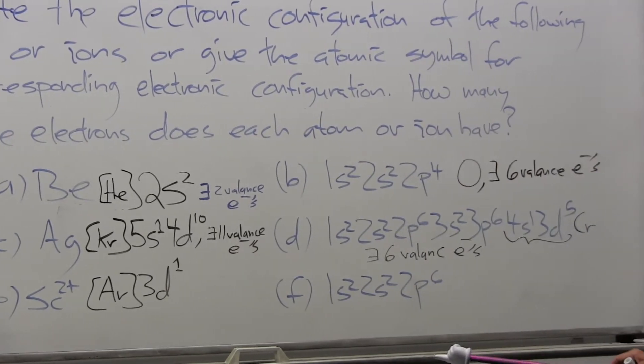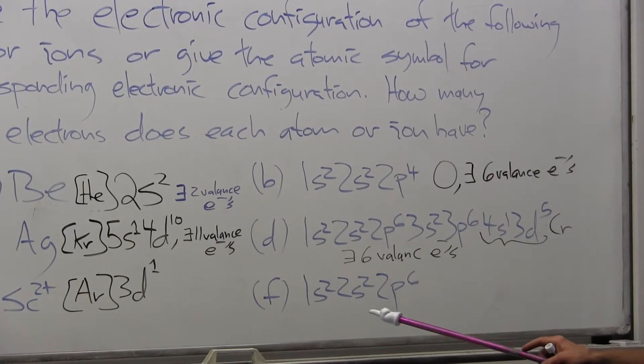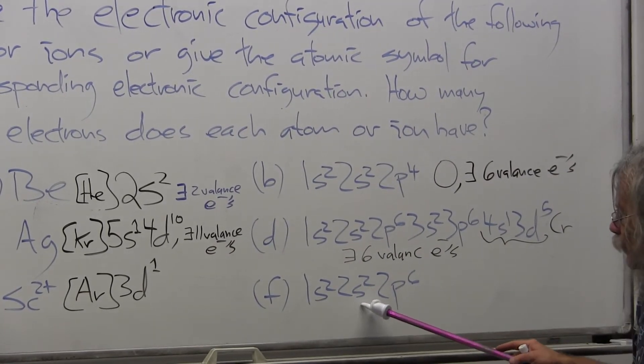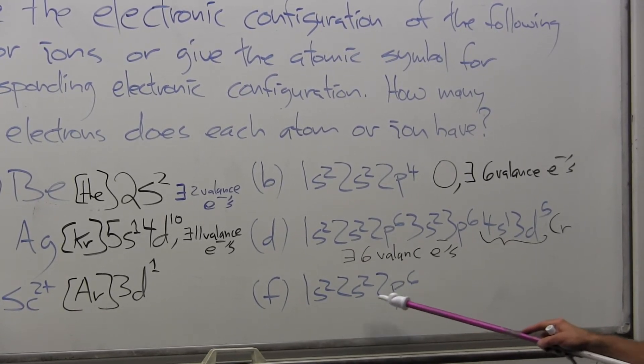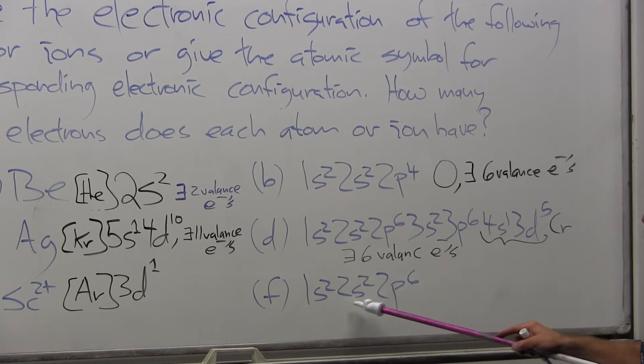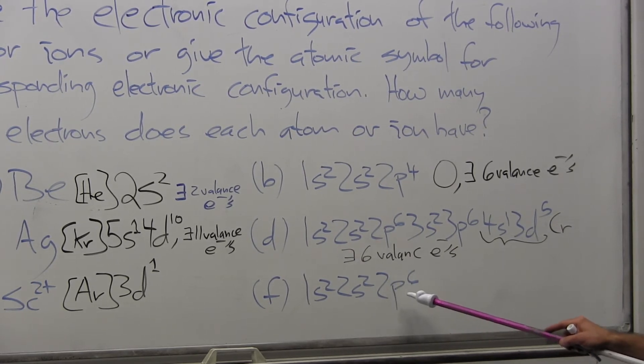The last one, example F: we're given 1s2 2s2 2p6. We've already filled helium, and now we're going through the p manifold.